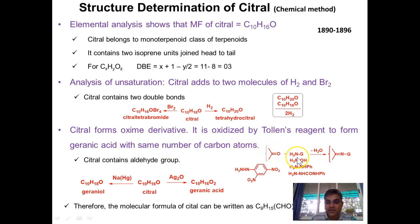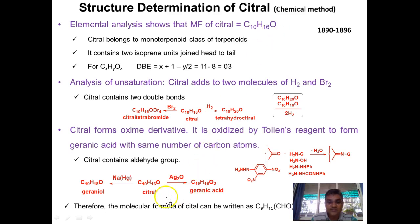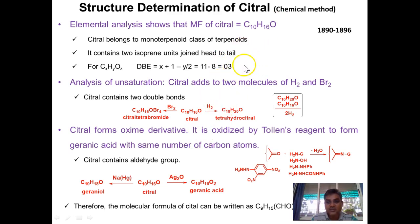When citral is treated with Tollens' reagent — ammoniacal silver nitrate — it forms a carboxylic acid with the same number of carbon atoms, clearly indicating an aldehyde functional group. Similarly, citral on reduction gives a primary alcohol called geraniol. Since an aldehyde gives both a positive Tollens' test and a primary alcohol on reduction, it is confirmed that citral contains a CHO group. This CHO group accounts for the third degree of unsaturation, giving two C=C double bonds and one aldehyde.